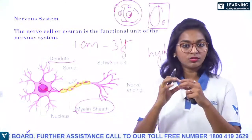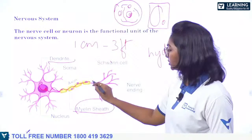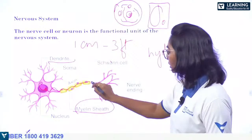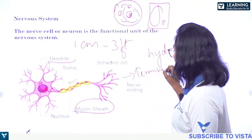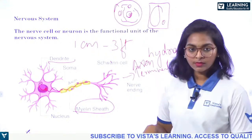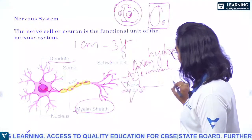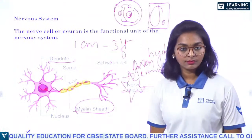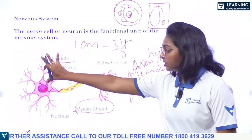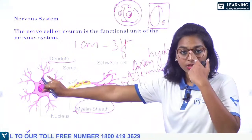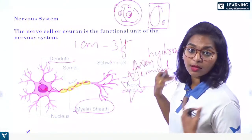The axon is surrounded by the myelin sheath, which acts as a covering or insulation. The impulse passes through the axon to the axon terminal. From the axon terminal, the next cell starts — with dendrites, an axon, and a terminal again. This continues as a chain. The dendrite collects information, passes it through the cell body, through the axon, and to the axon terminal, where it is transmitted to the next nearby neuron.